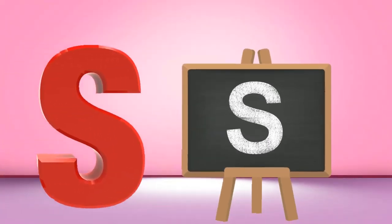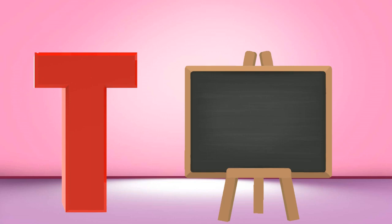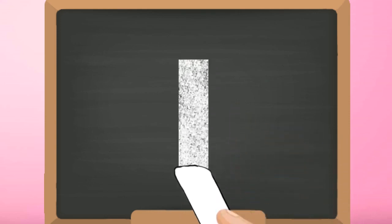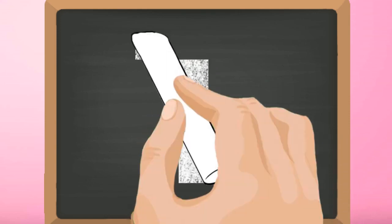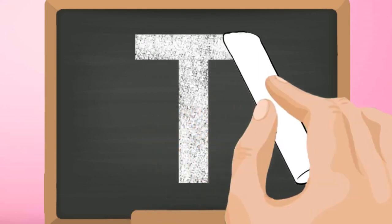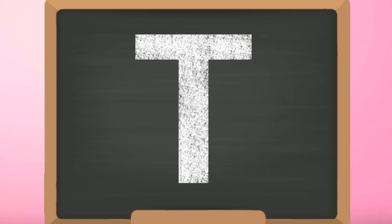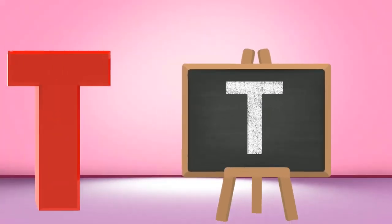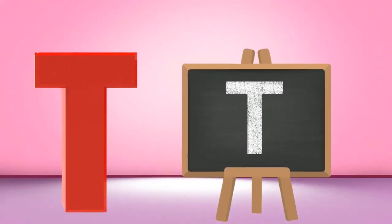Capital S. T, capital T. Start from the top and draw a standing line down. Go back to the top and draw a slanting line across. Capital T.